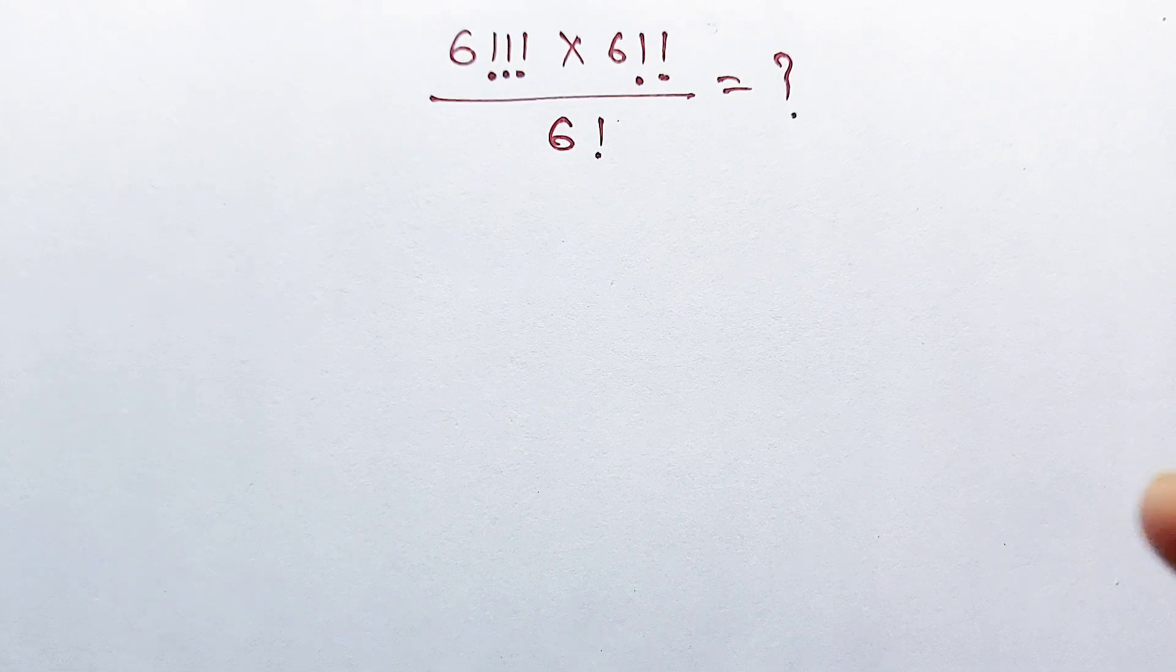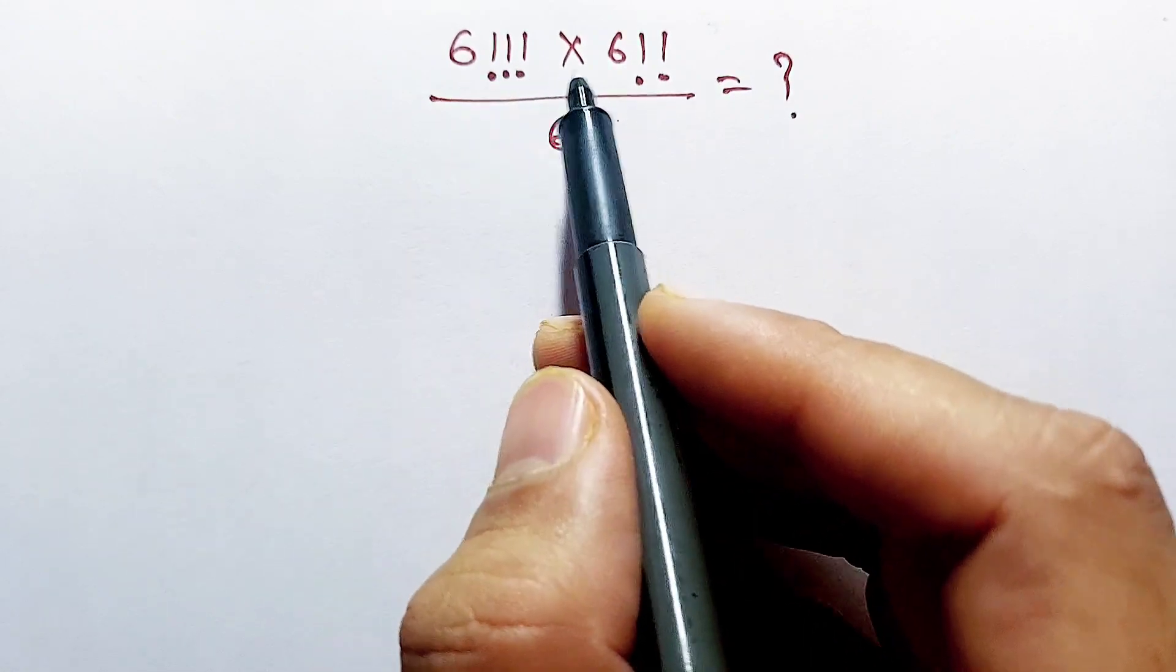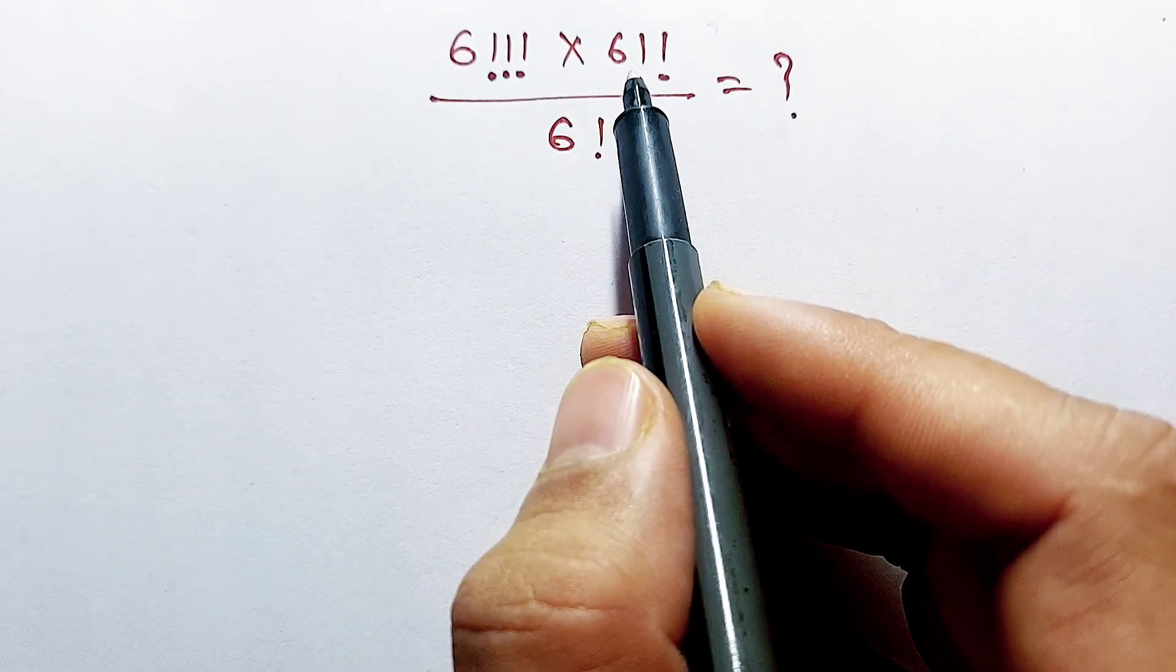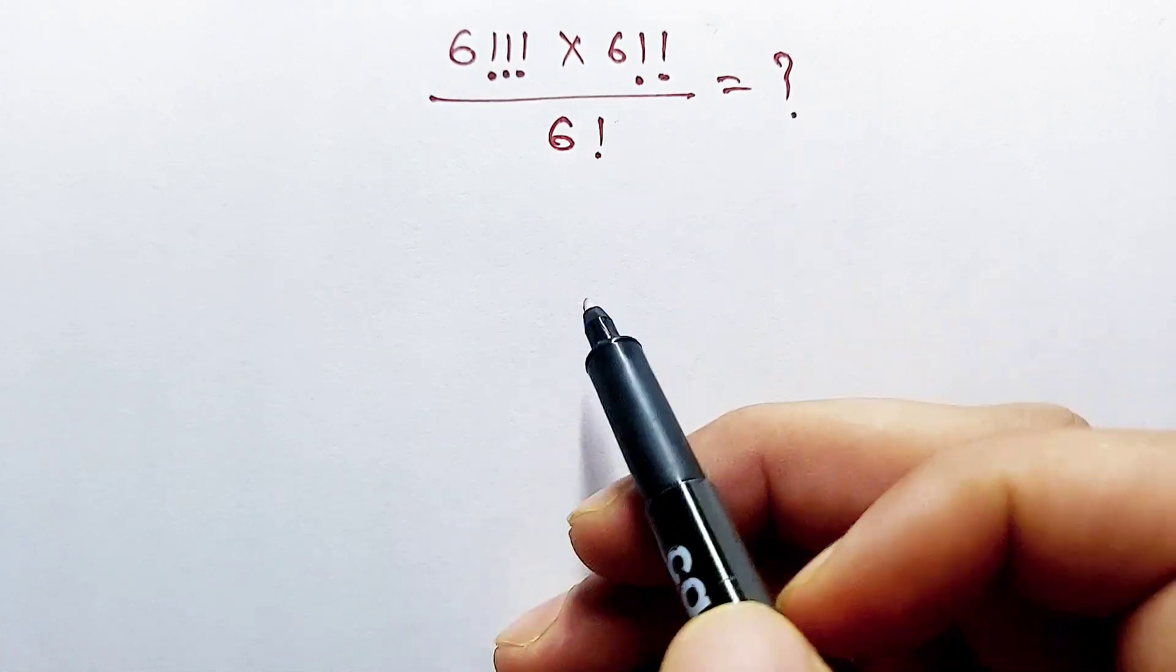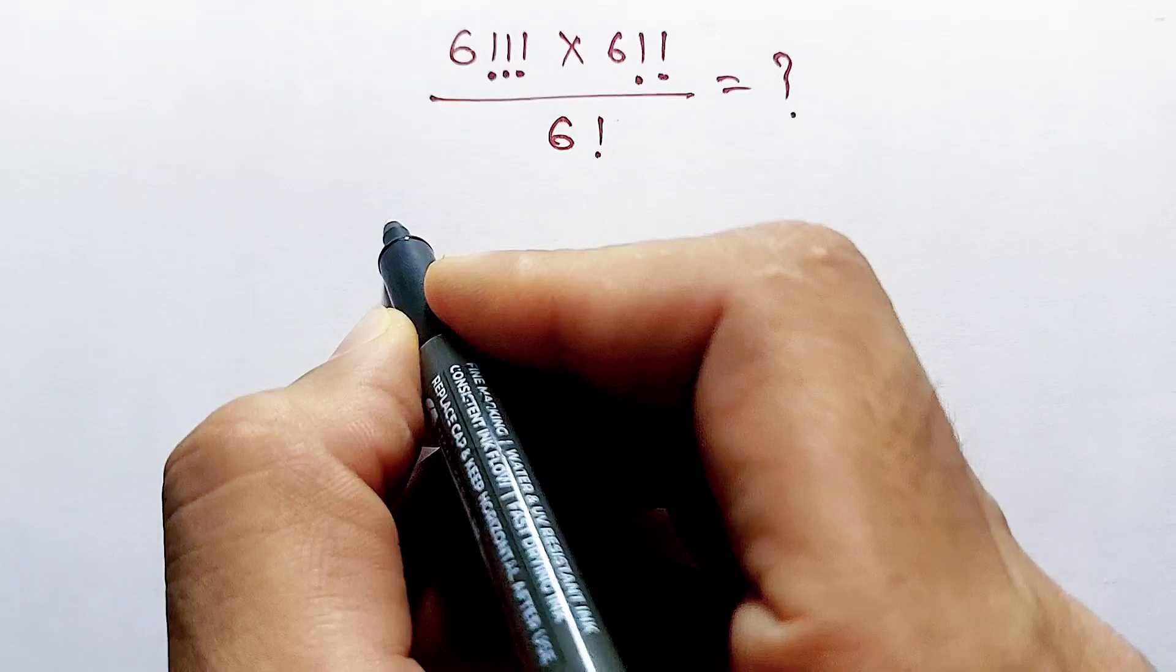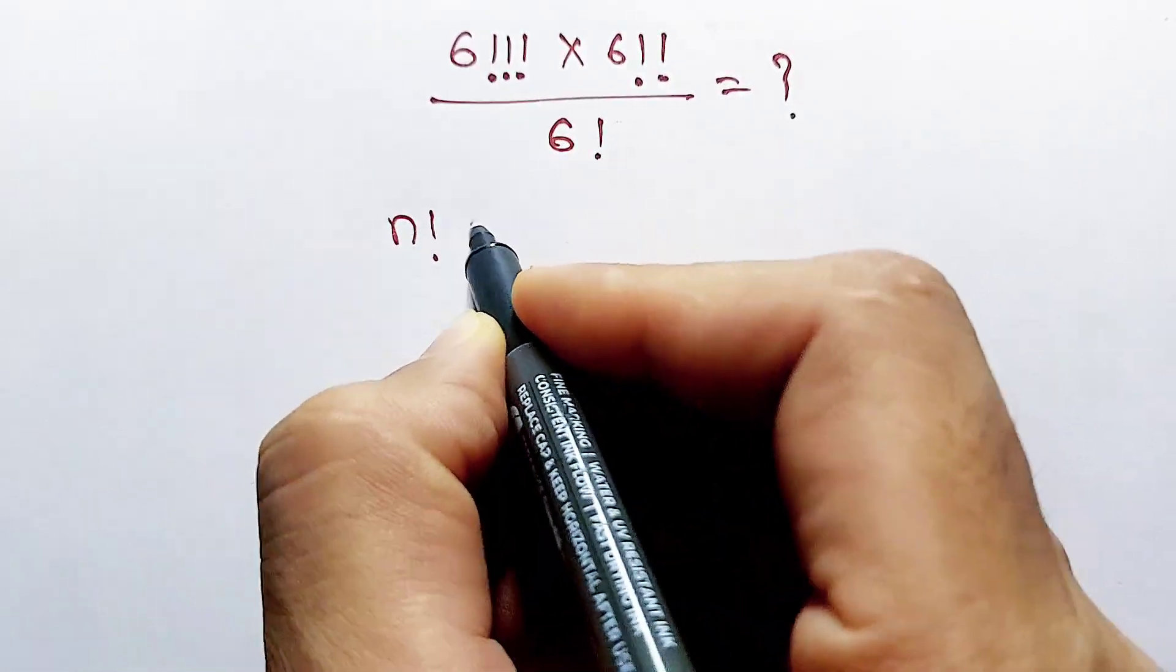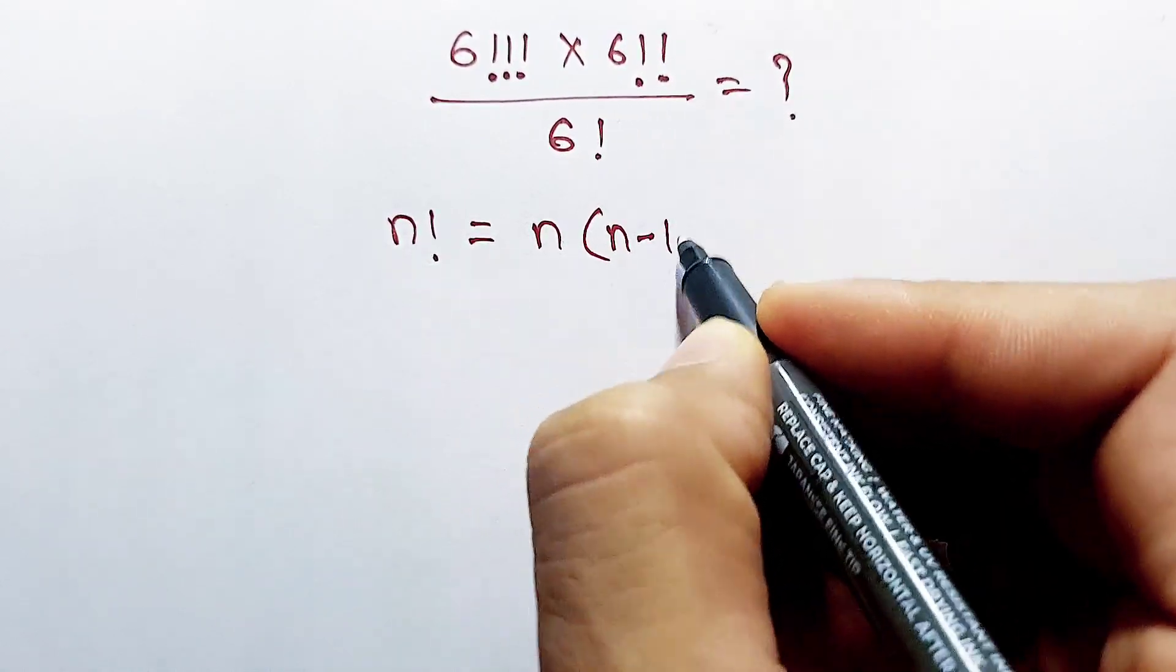Hello dosto, the question is triple factorial of 6 multiplying double factorial of 6 divided by 6 factorial equal to what? So first of all we should know that n factorial is equal to n multiplying n minus 1.